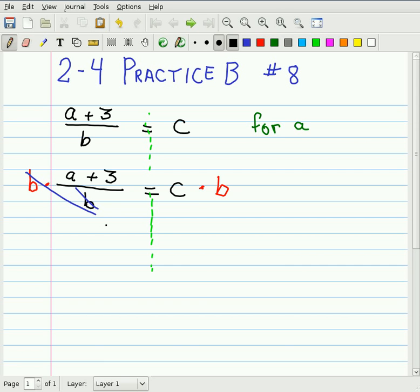When I cancel those bs out, I'm left with a + 3 = cb or c times b.